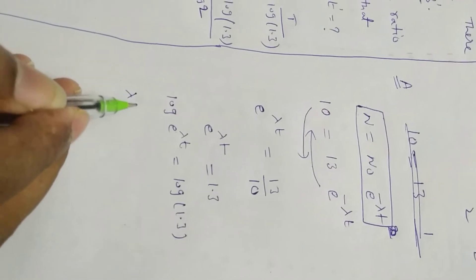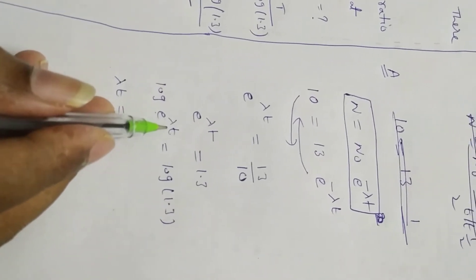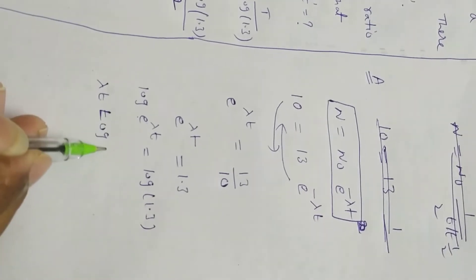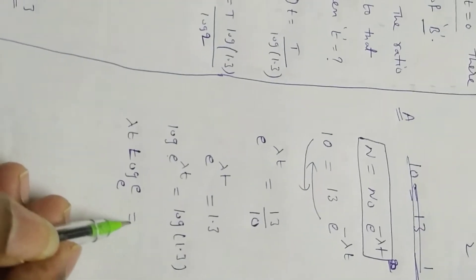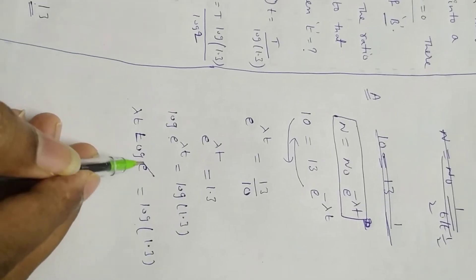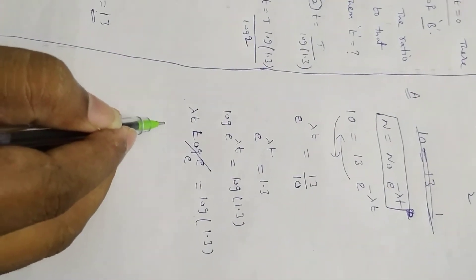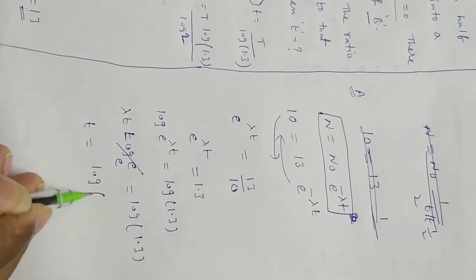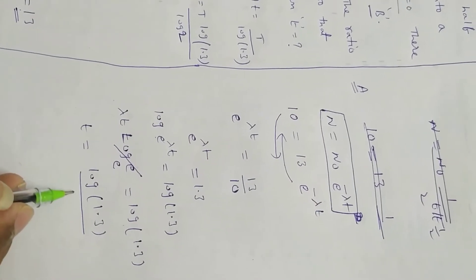Finally, in mathematics, log a power m writes as m log a. Here, lambda t times log e base e equals log of 1.3. Log e base e value writes as 1. So here, find t value: t equal to log of 1.3 by lambda.